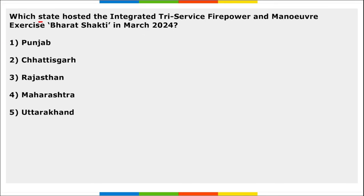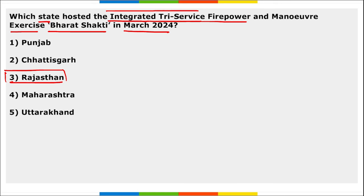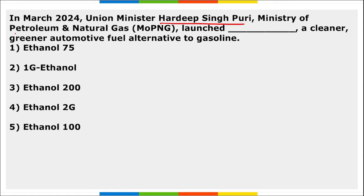Rajasthan hosted the integrated tri-service firepower and maneuver exercise 'Bharat Shakti' in March 2024. Tri-service means the Army, Navy, and Air Force all participated. The exercise was held at the Pokhran range in Rajasthan.